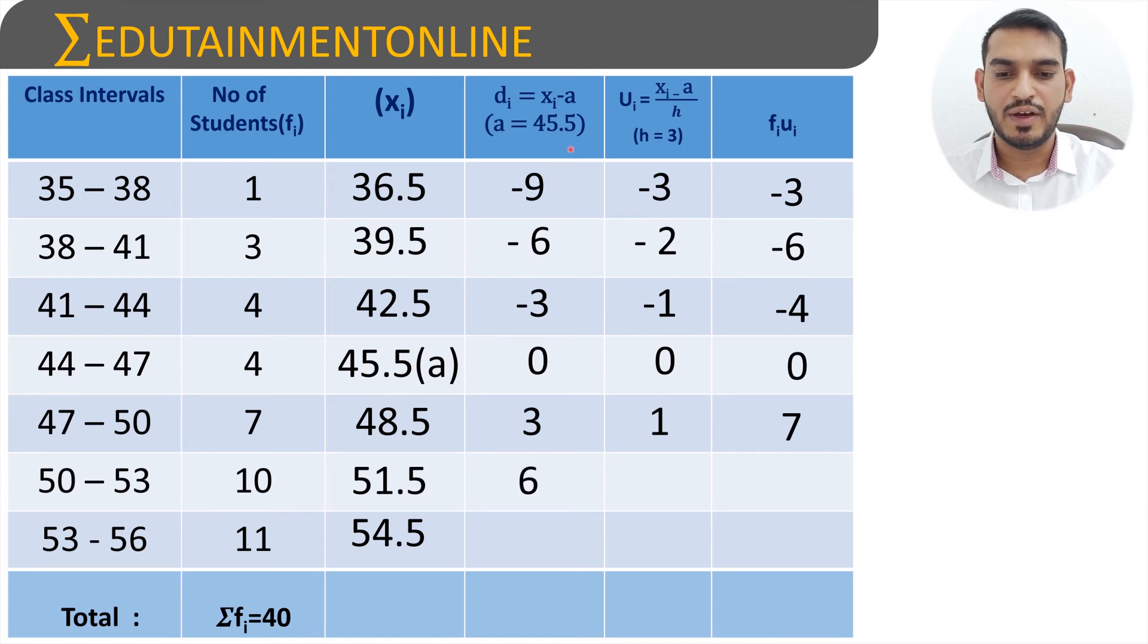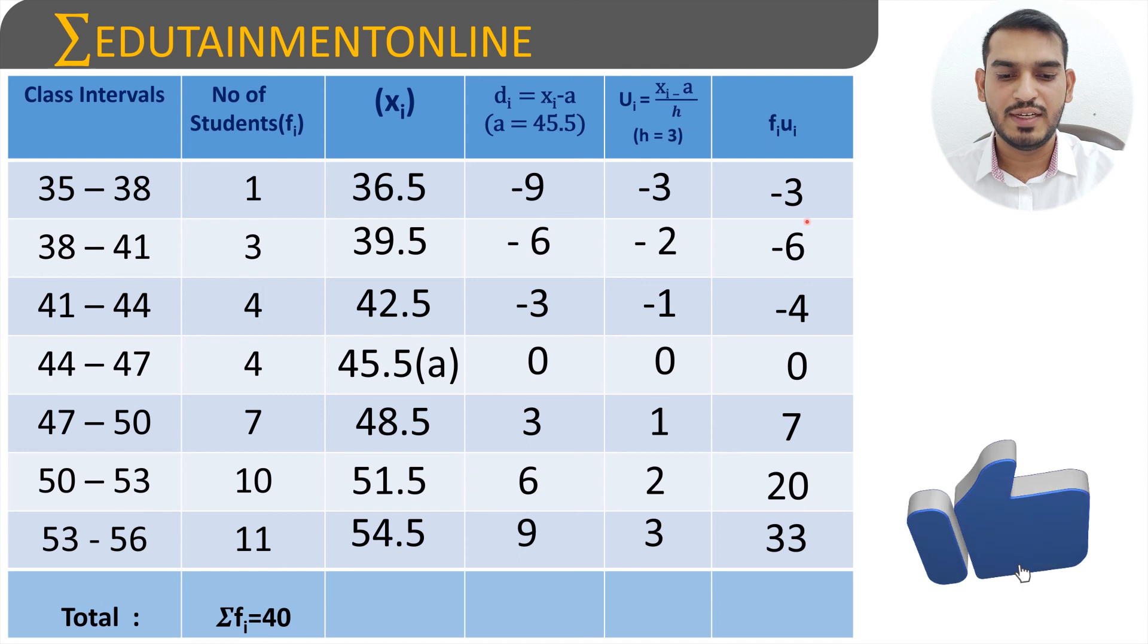51.5 minus 45.5 is 6. 6 divided by 3 is 2. 2 times of 10 is 20. And 54.5 minus 45.5 is 9. 9 divided by 3 is 3. 3 times of 11 is 33.